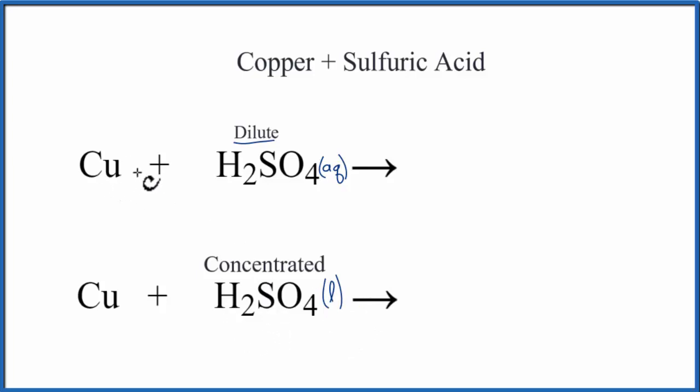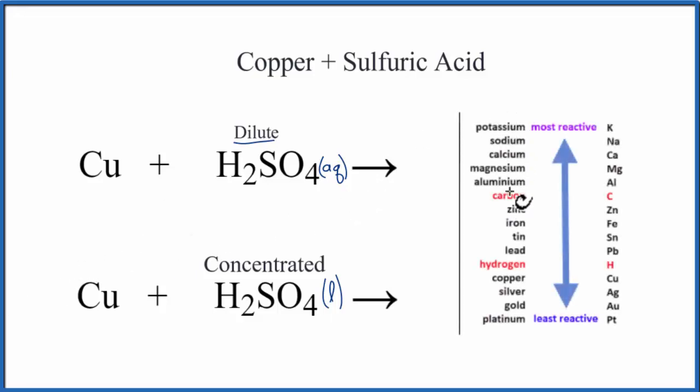So when we mix copper plus dilute H2SO4 dissolved in water, we need to look at the activity series to see what will happen. As we go down the activity series, at the top we have the most reactive, at the bottom the least. We go down, here's hydrogen, and then here's copper.